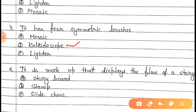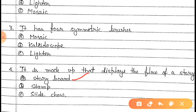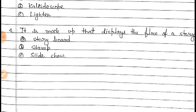Now come to question number four. Question number four is: it is a mock-up that displays the flow of a story. In this question you will get three options — option A is Storyboard, option B is Stamp, and option C is Slideshow. Option A is the right answer — Storyboard. A storyboard is a mock-up that displays the flow of a story; it displays the storyboard one by one.